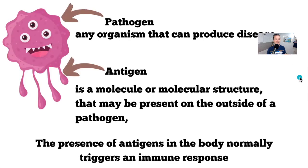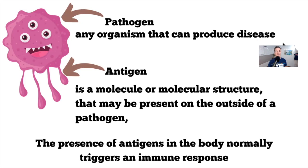So let's quickly talk about allergy-induced processes in the body. A pathogen could enter your body — any organism that can produce a disease. On those pathogens you will have antigens, which are molecules or molecular structures present on the outside of the pathogen. It's the presence of these antigens that will trigger the body's autoimmune response.